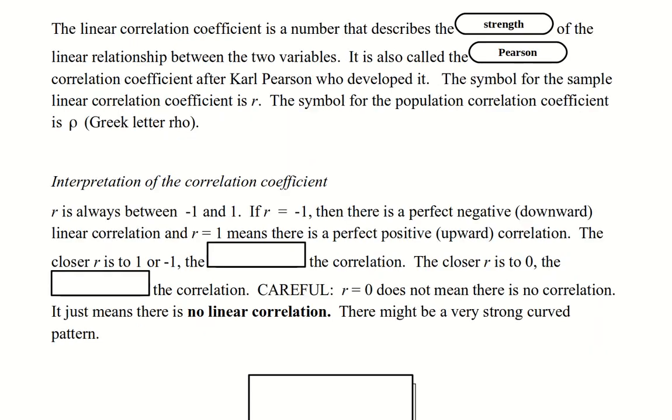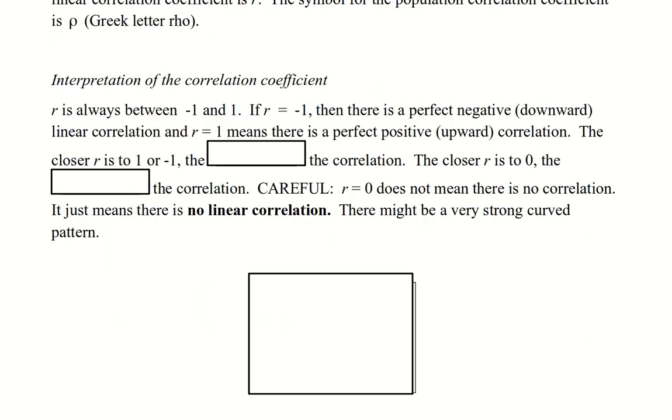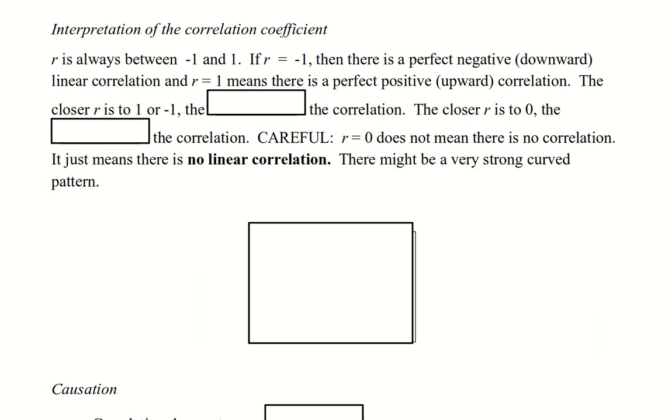r is always between negative 1 and 1. If r equals negative 1, then there is a perfect negative, that means downward, linear correlation. And r equals 1 means there is a perfect positive, that is upward correlation. The closer r is to 1 or negative 1, the stronger the correlation. The closer r is to 0, the weaker the linear correlation.